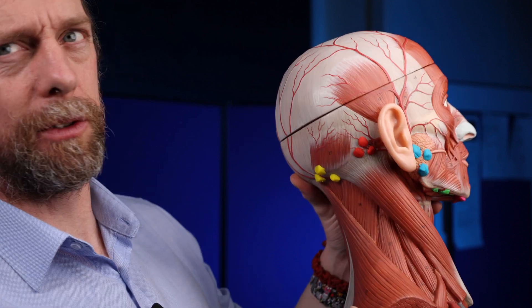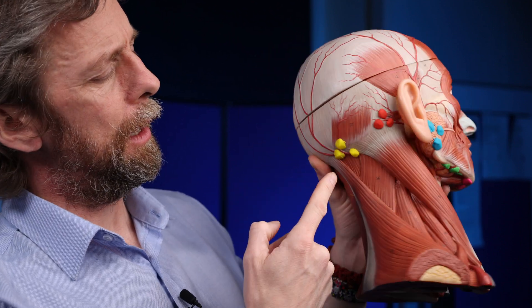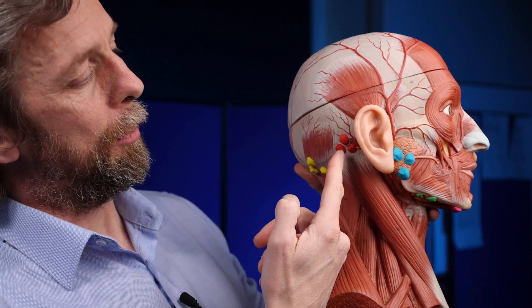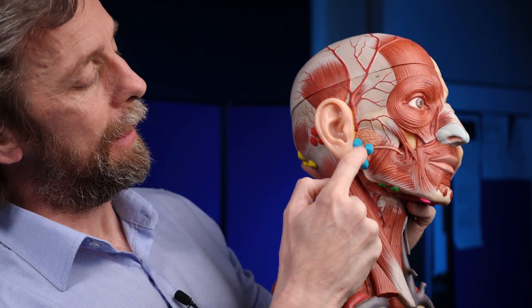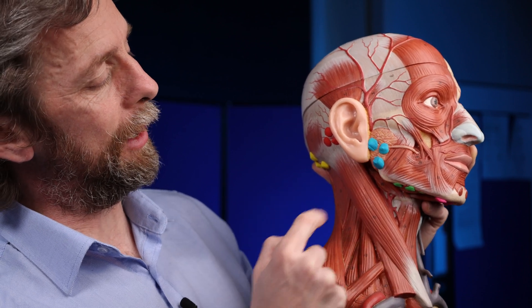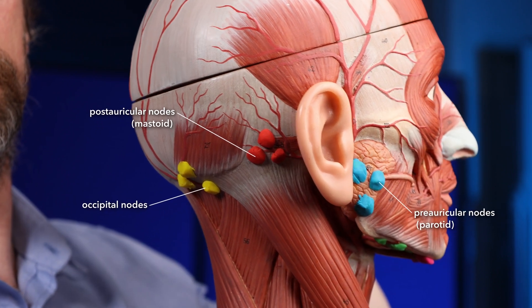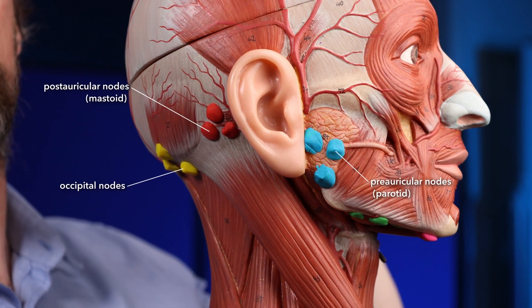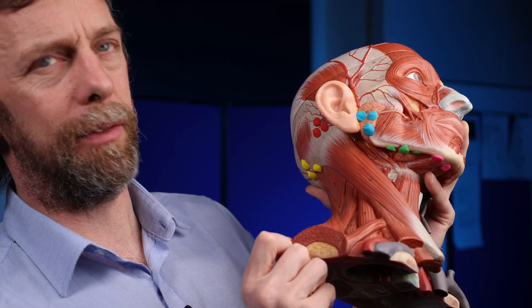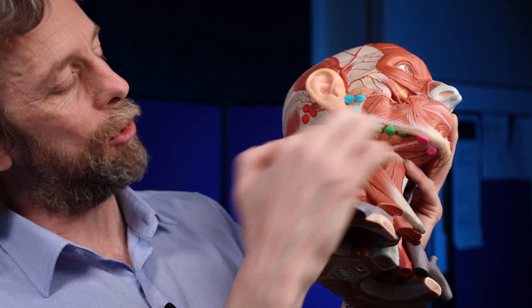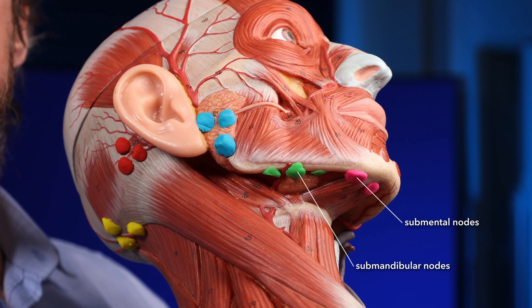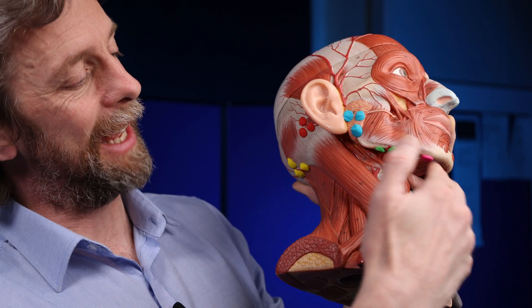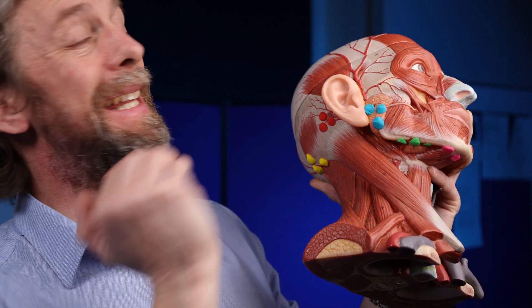So here's the auricle here. Those are the occipital nodes. Those are the postauricular nodes by the mastoid process — they might also get called mastoid nodes. These are parotid nodes or preauricular nodes, and look, they are right next to the parotid salivary gland — so don't mix up the lymph nodes with the salivary gland. And then in green under here we have the submandibular nodes, right next to the submandibular salivary gland. And then here underneath the chin, underneath the mentum, we have the submental nodes. So that is the superficial ring around the base of the head and the neck.